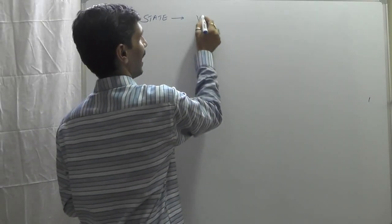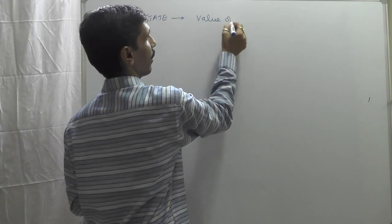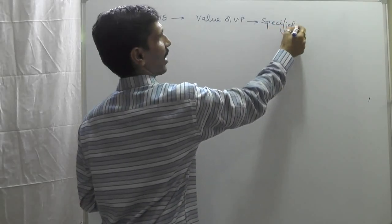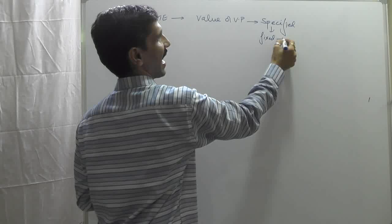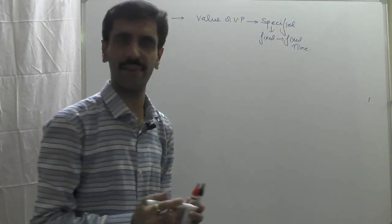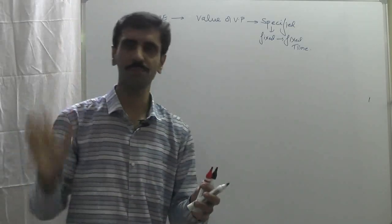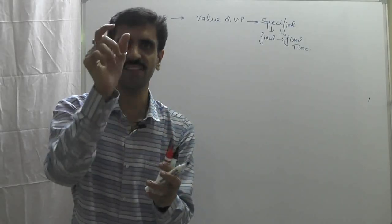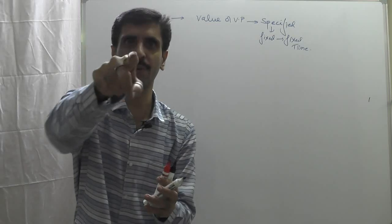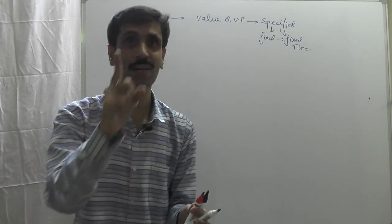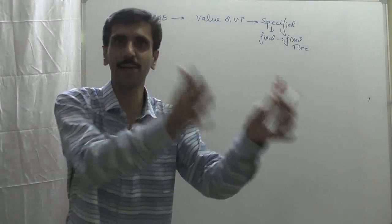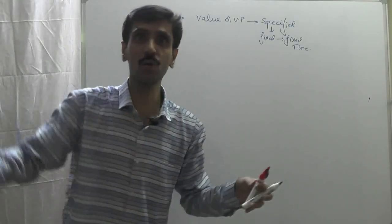The state of a system means the values of the variable properties are specified at a fixed time. For example, with respect to temperature: if I fix the time at 6 o'clock in the morning and give you a thermometer, your answer will be one fixed value.